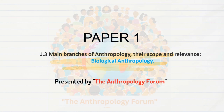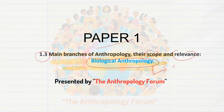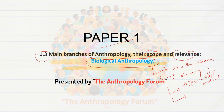Hello everyone, welcome to another lecture on anthropology, paper 1. Today we will be discussing biological anthropology, which comes under syllabus 1.3 under the heading 'The Scope and Relevance of the Subfields of Anthropology.' Similar to our previous lecture, we will discuss the key study areas of this subfield, the emerging trends, the approaches and methods used, the relevant scope, and some of the anthropologists related to this subfield.